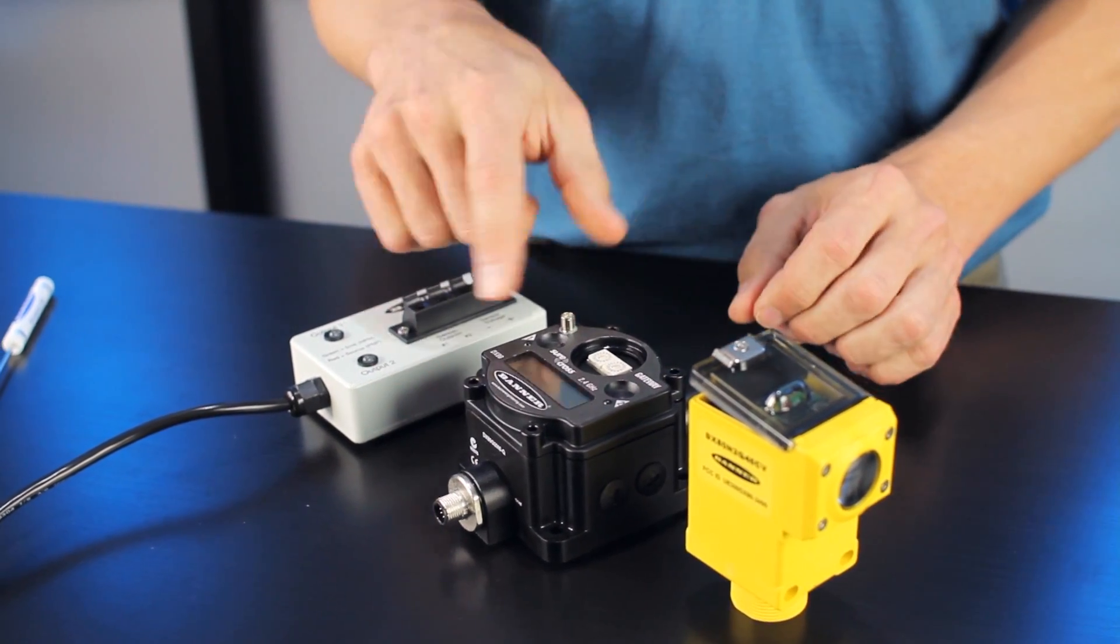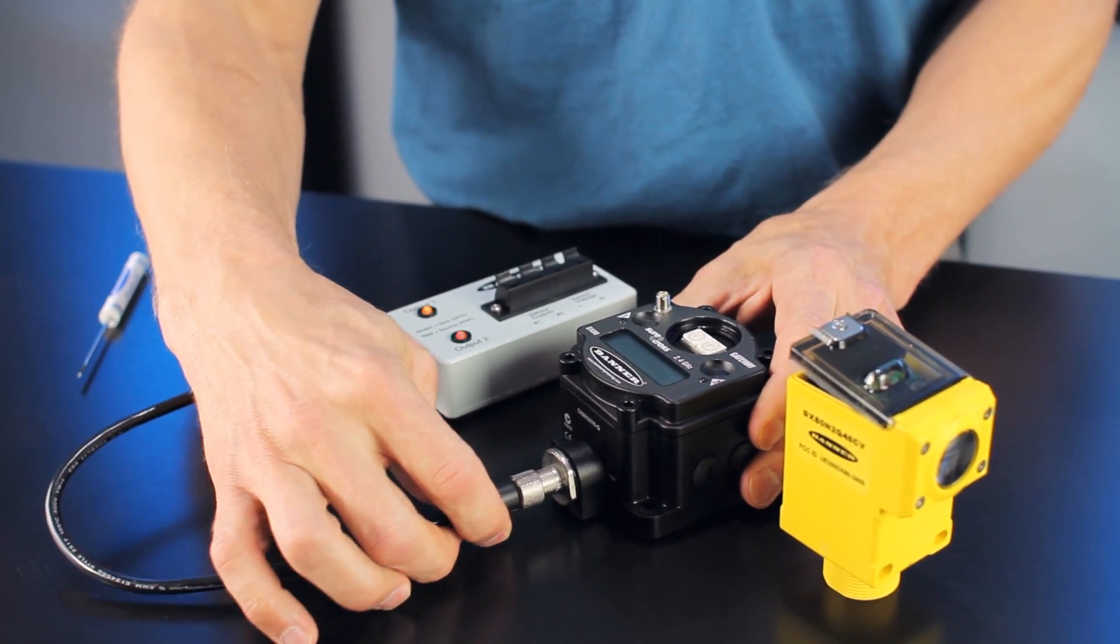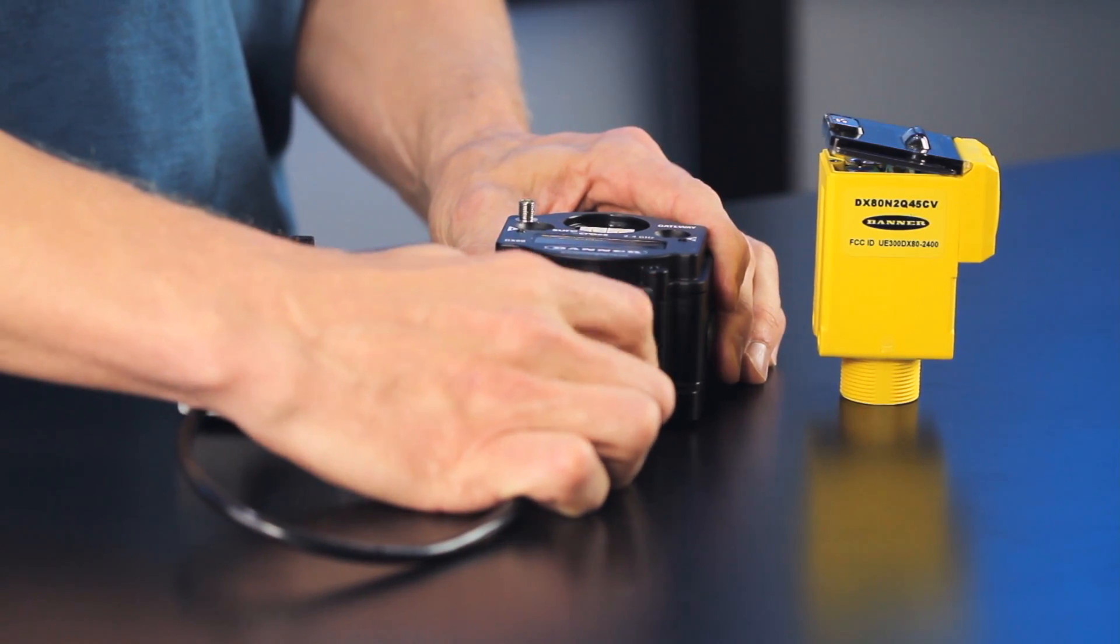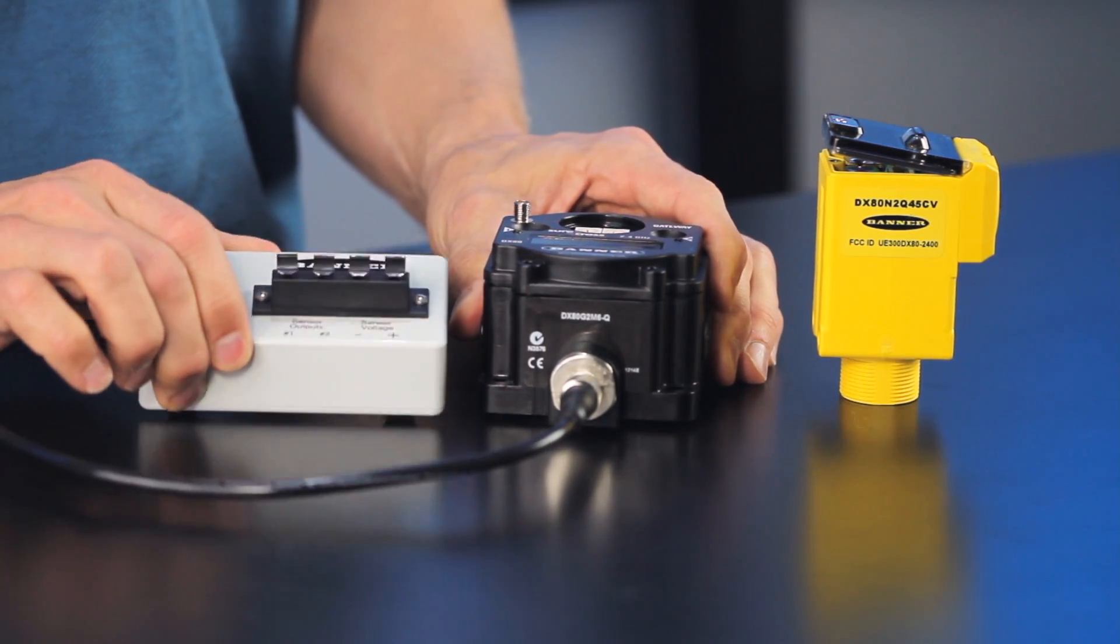Once you have the outputs wired, power up the gateway using 10 to 30 volts DC. Here we're using a DBQ5 demo box.